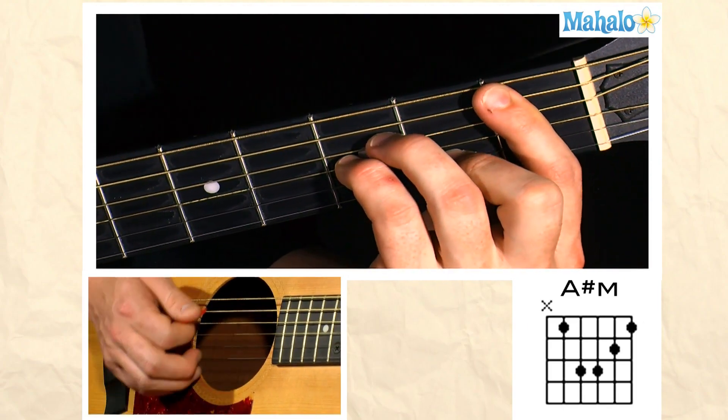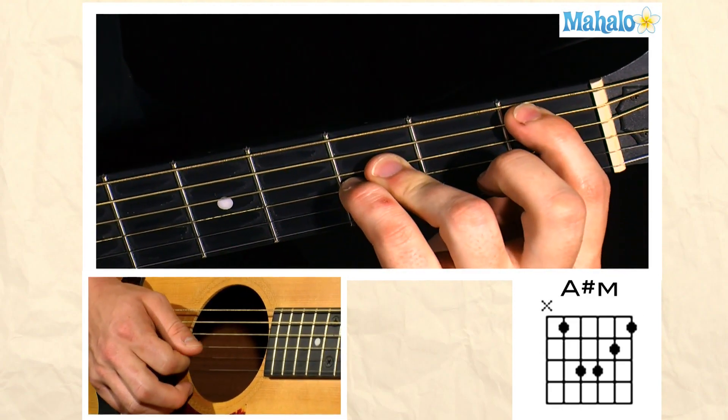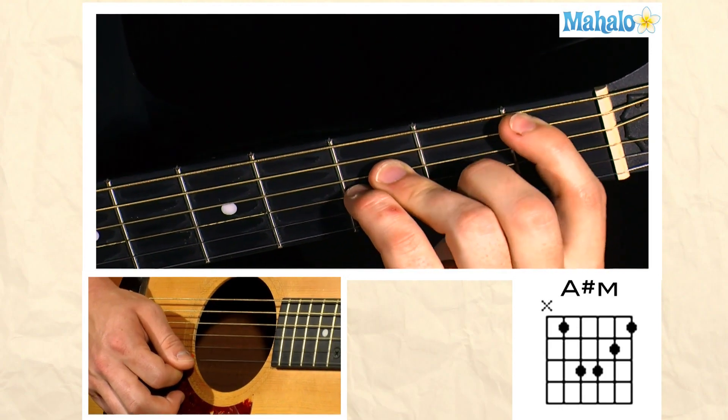So right here on the B string, second fret. You put your power chord, and then you can add this high note.